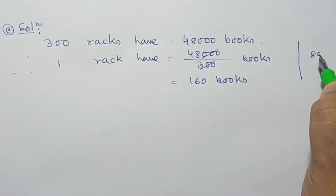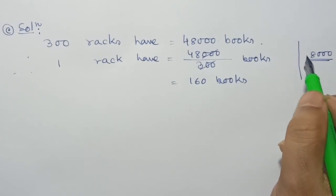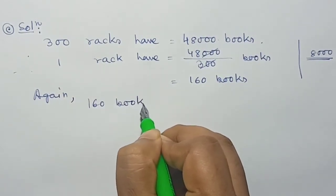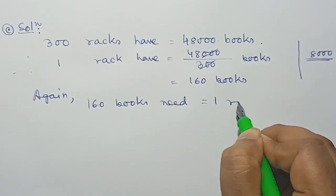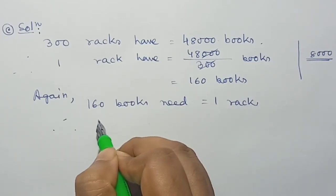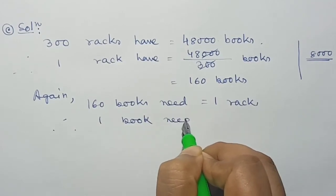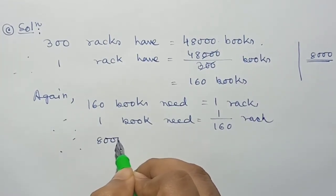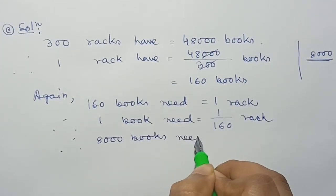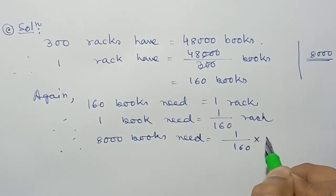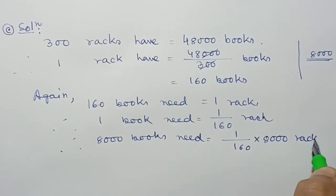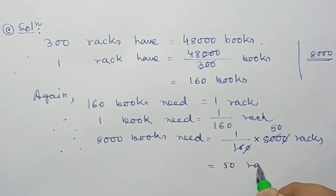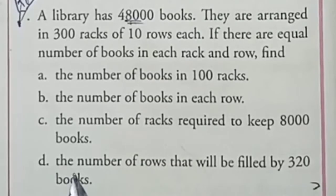Now we need to find how many racks are needed for 8,000 books. 160 books need 1 rack. Therefore, 1 book needs 1/160 rack. Finally, 8,000 books need (1/160) × 8,000 racks. Cancelling, 16 goes into 8,000 giving 50 times. Therefore, 50 racks are needed for 8,000 books.